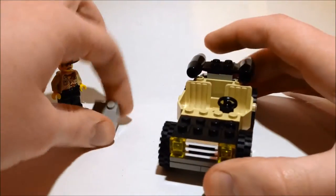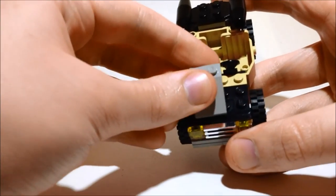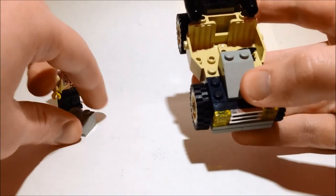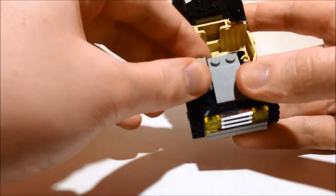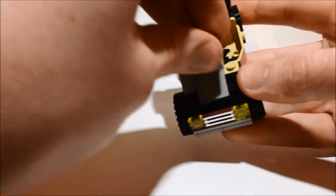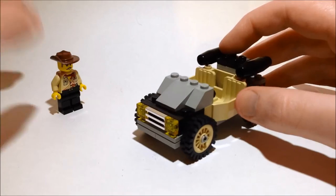And then finally we have the top bit here which consists of a 2x3 slope piece and then two 1x2 slope pieces. And then we have Johnny Thunder's car all complete.